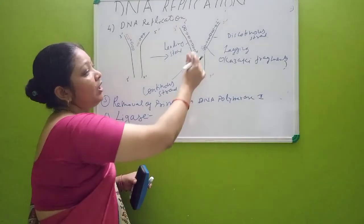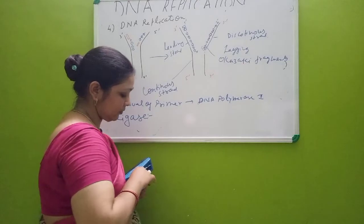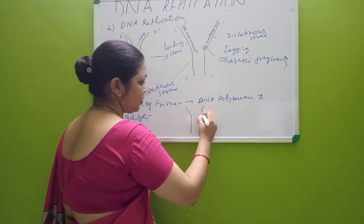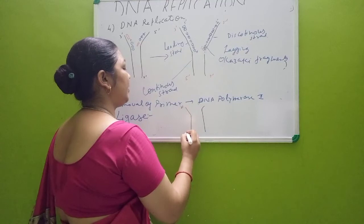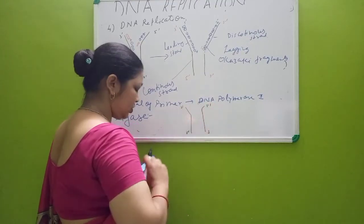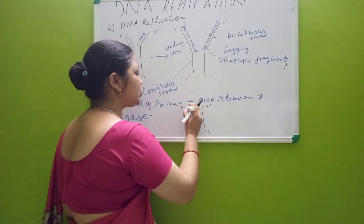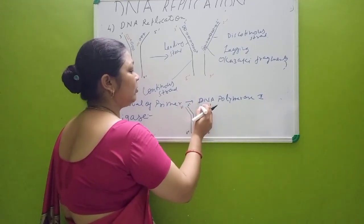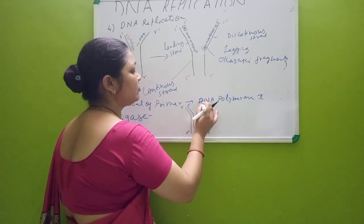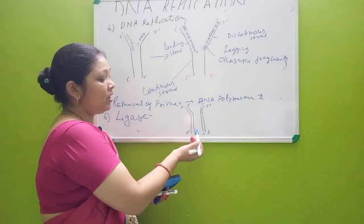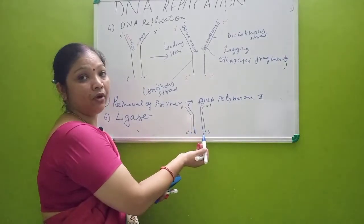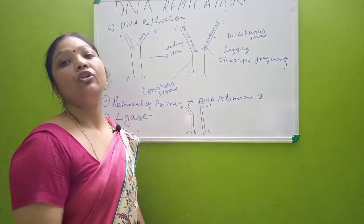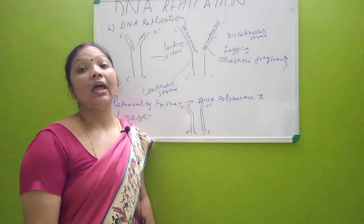After replication, from one parent DNA, two DNA molecules are formed. One was the parent strand running three prime to five prime and five prime to three prime. The new strands are each formed from five prime to three prime. From one single parent DNA, two DNA molecules are produced — this is the process of DNA replication.